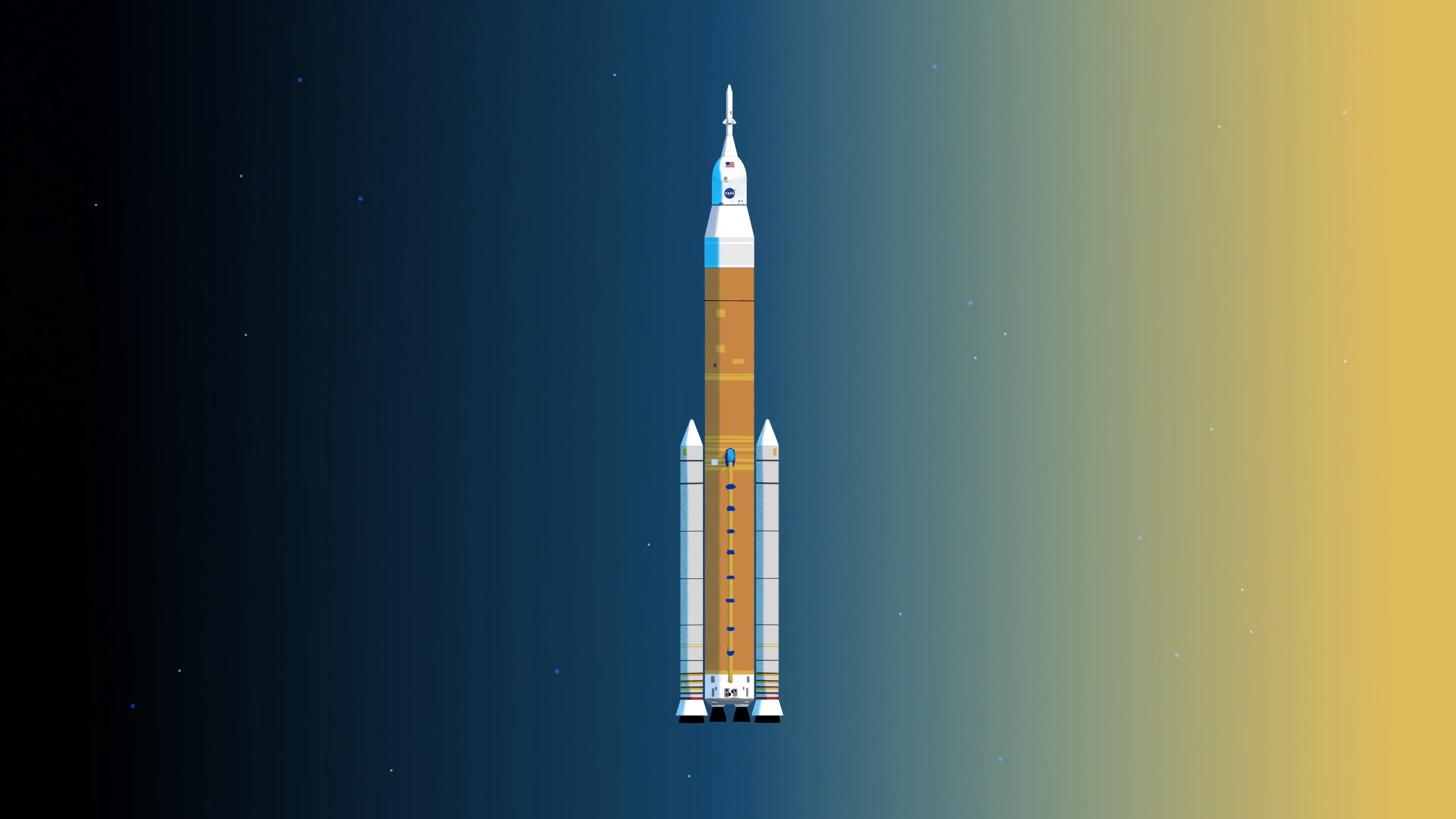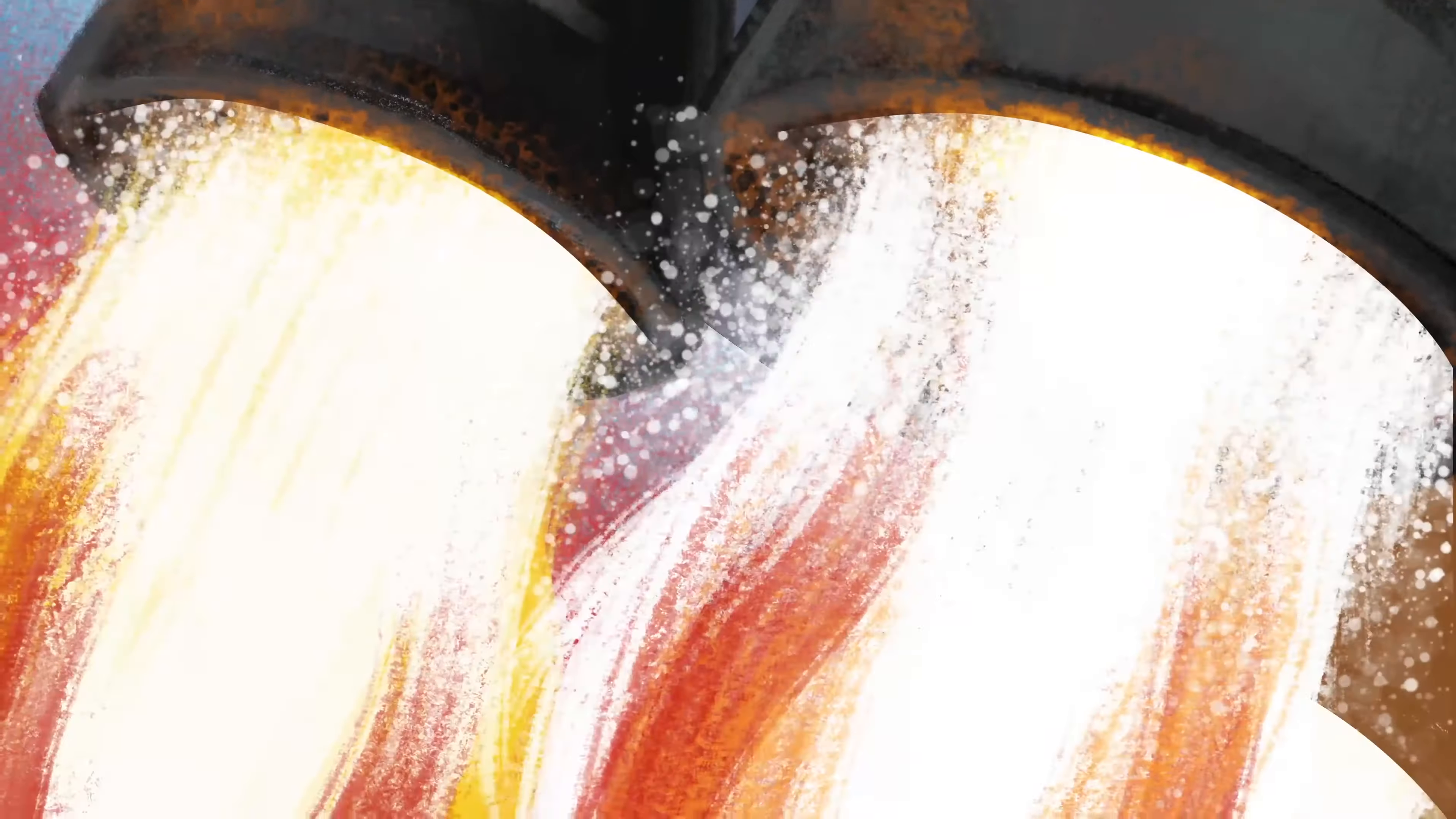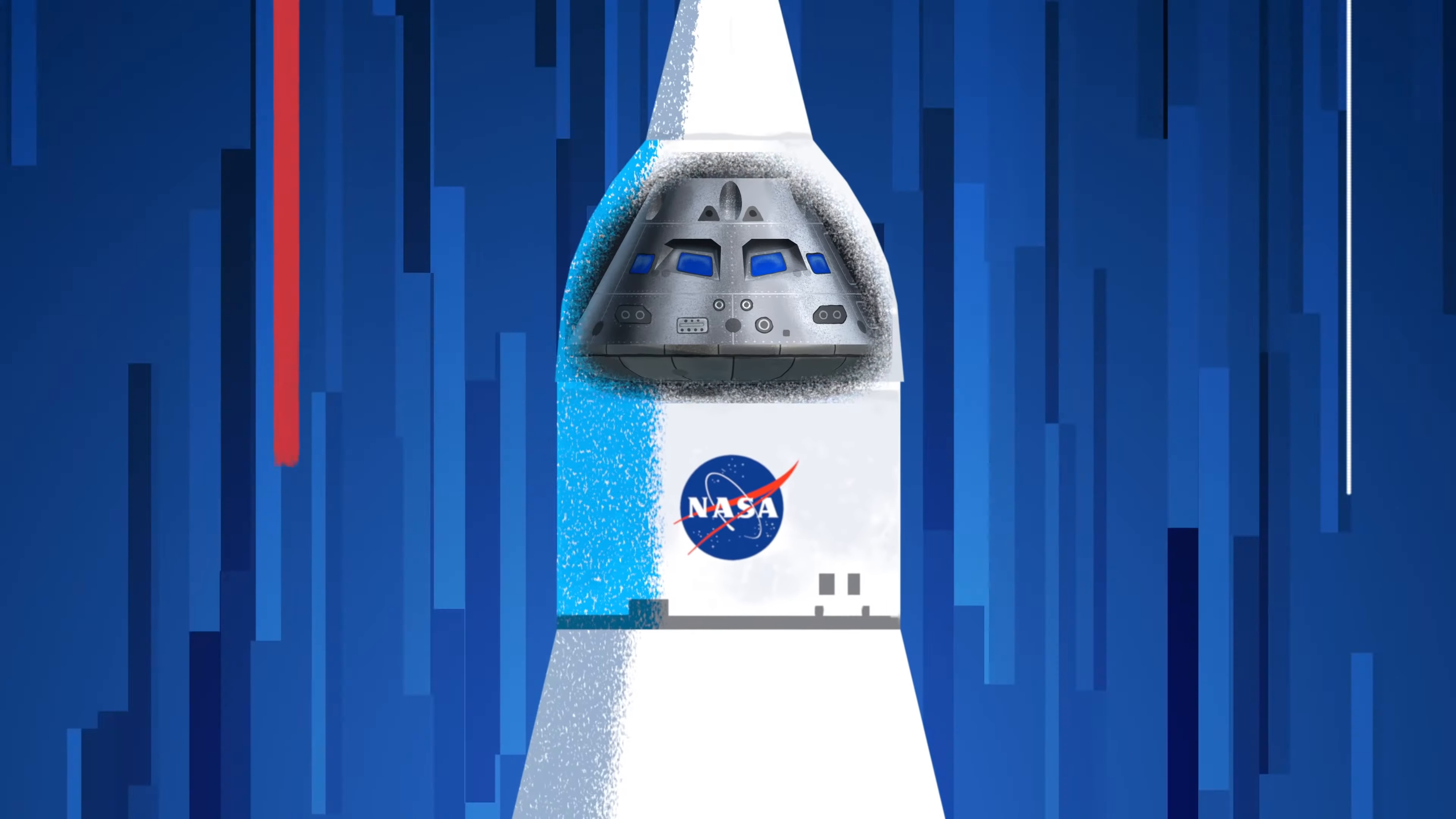Sitting on the launch pad, the entire rocket, fully fueled, weighs just over 6 million pounds, 5.2 million of which is just the fuel. Once ignited, there's no stopping what comes next. All four RS-25 engines and the two solid rocket boosters come to life thundering our crew upwards.